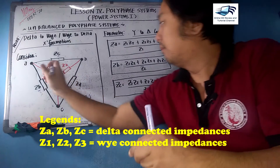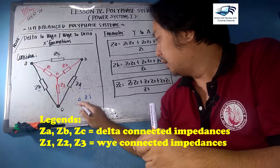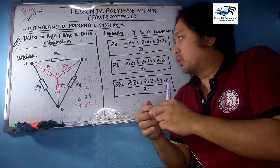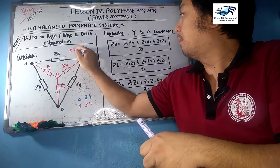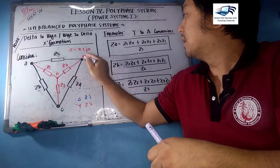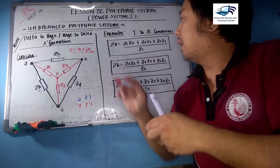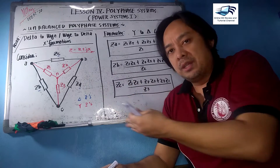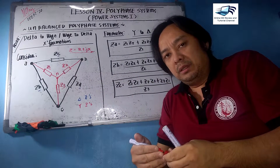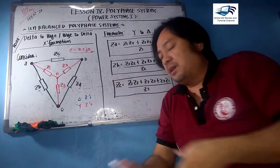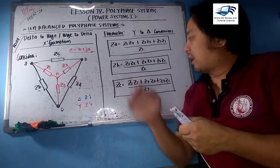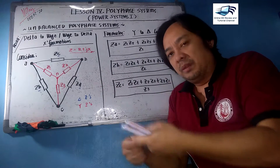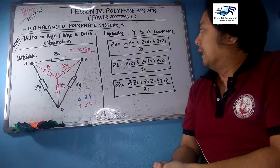Z1, Z2, and Z3 are called the Y impedances. An impedance is a complex number with a real component and a reactive component in an AC system. You can also apply this to DC systems — the only difference is there is no reactive component in a purely resistive circuit. These are flexible formulas and will be discussed with examples in upcoming lessons.